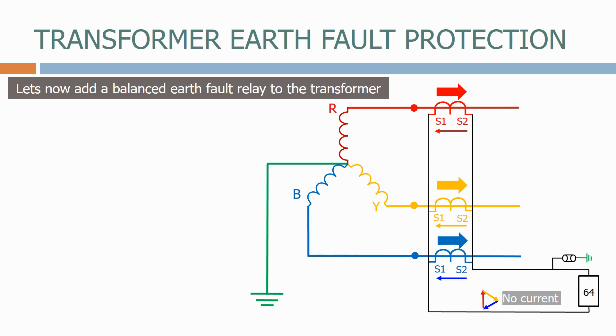Let's now apply a fault to the red phase conductor. Current will now flow through the red phase, into the ground, up through the ground conductor for the neutral point, and back to the transformer.